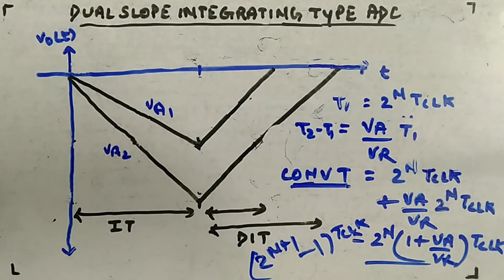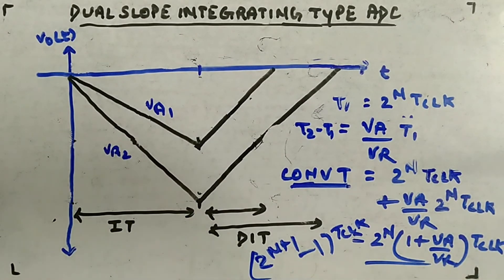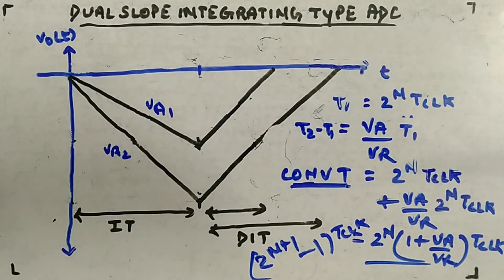Hopefully the discussion is clear. I'll take some questions on dual slope ADC and then close this topic.